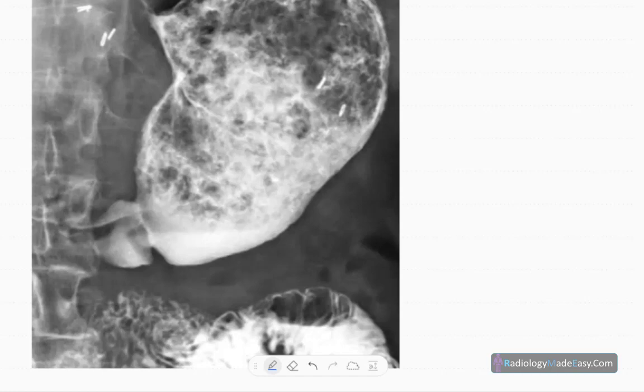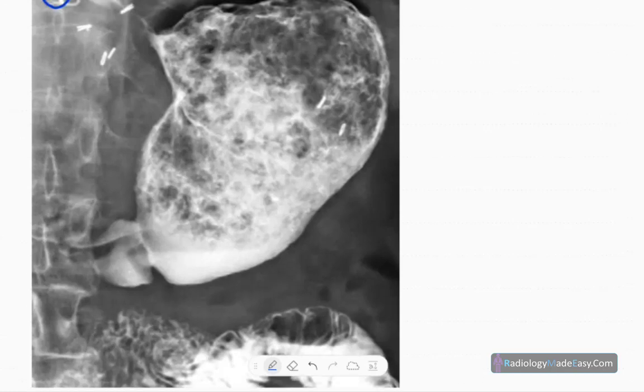You can see the distended stomach here. The stomach is normal in position, however is distended. You don't see the regular rugae pattern, so rugae pattern is absent and you can see a mottled appearance.